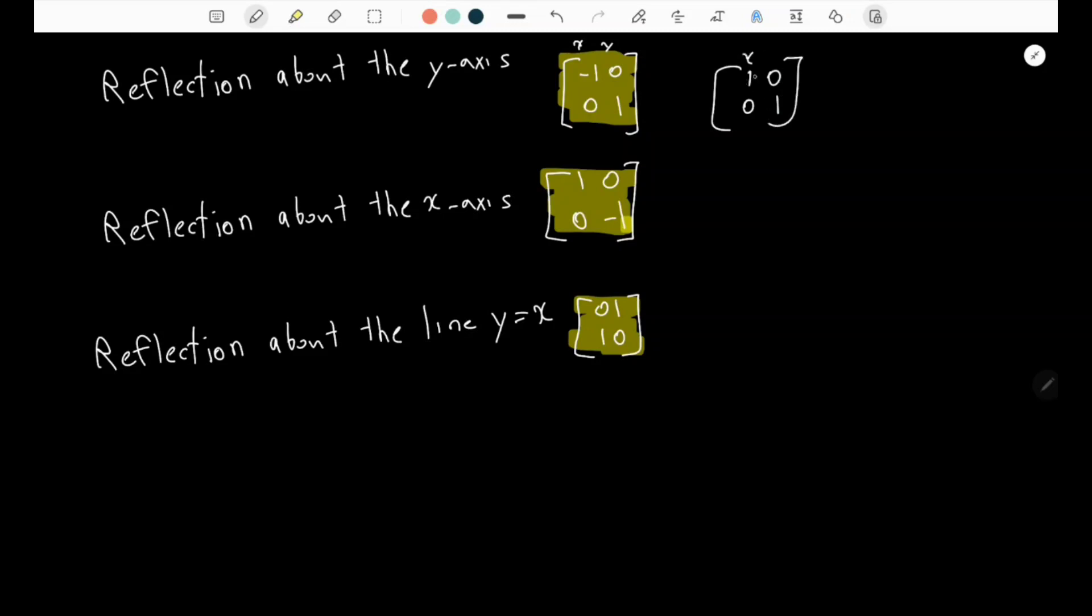The same thing for reflection about the x-axis: you're flipping the y-axis component. And reflection about y equals x is just flipping x and y. So this is what you need to remember - these matrices which are highlighted.